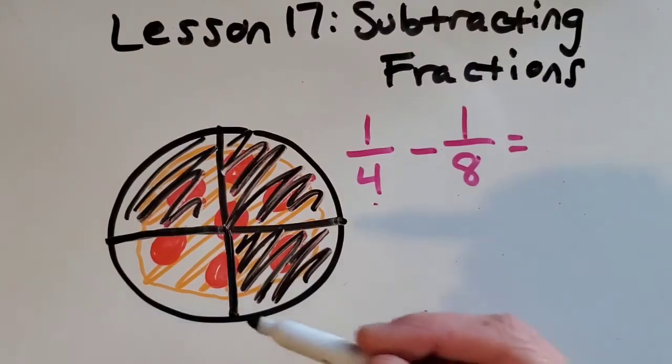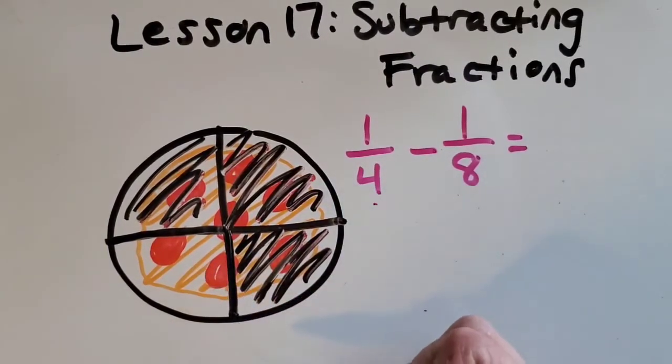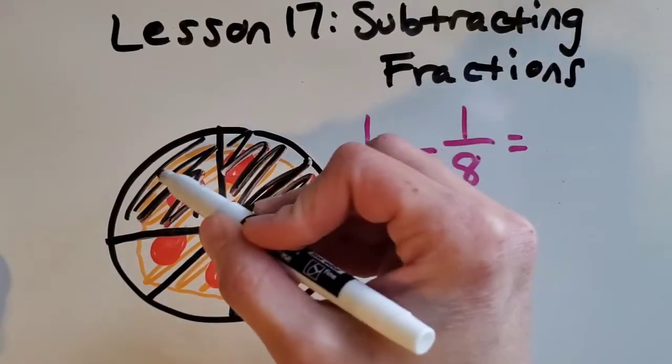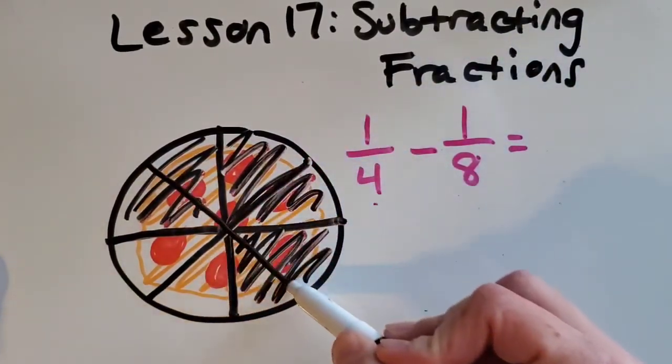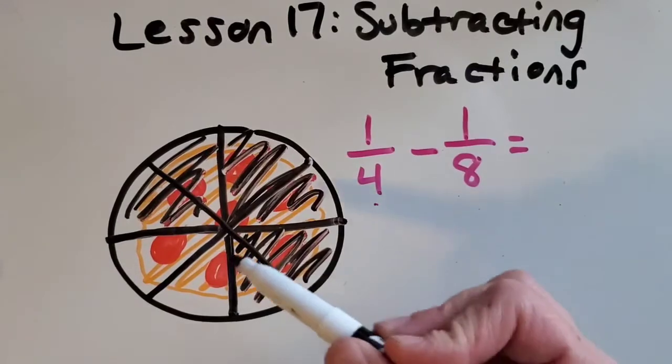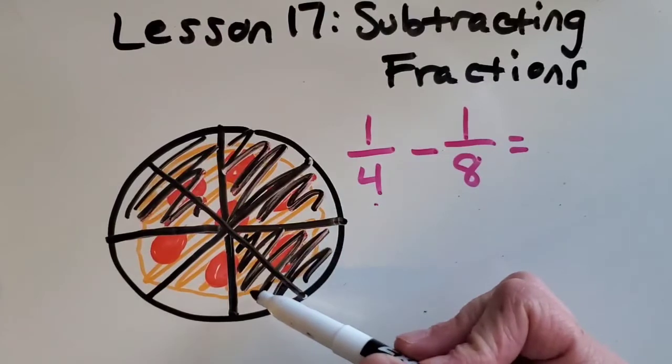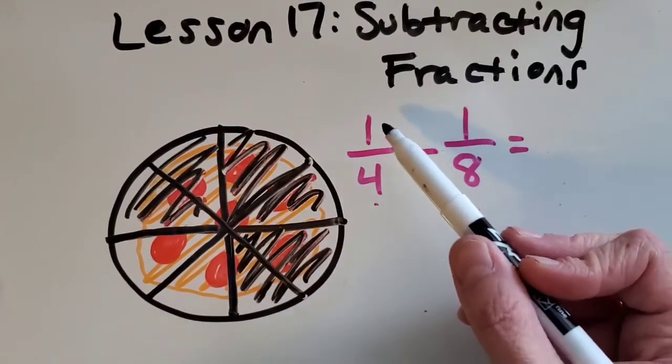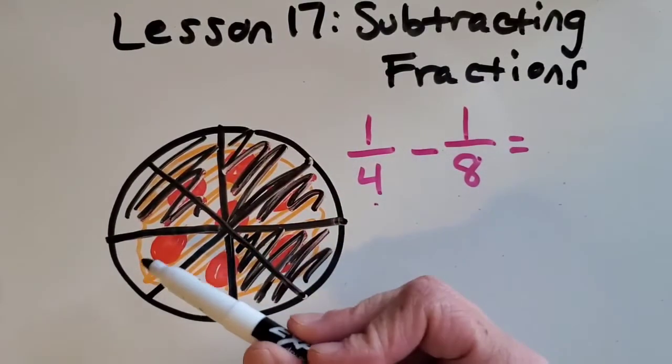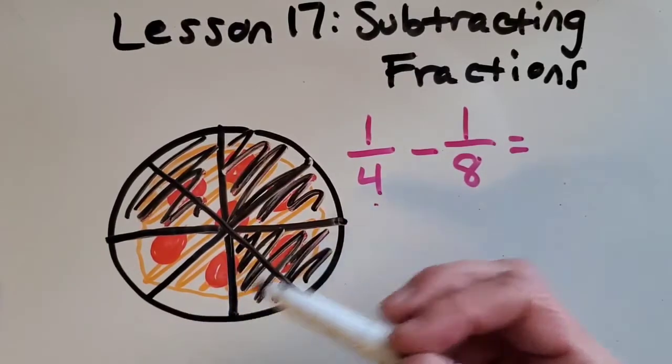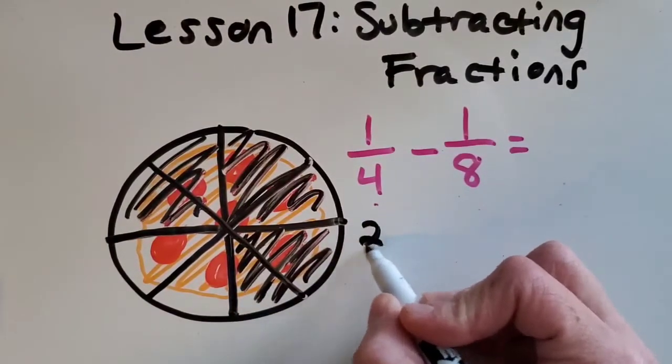So if we just slice up the pizza more we'll be able to do that problem. So I'm going to slice it up into eighths. It's really easy when you just make an x like that then now there's eight slices. Let's double check: 1, 2, 3, 4, 5, 6, 7, 8, and it looks like 1 fourth. Now what fraction does it look like?